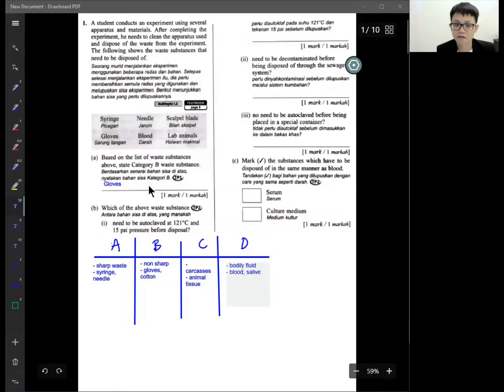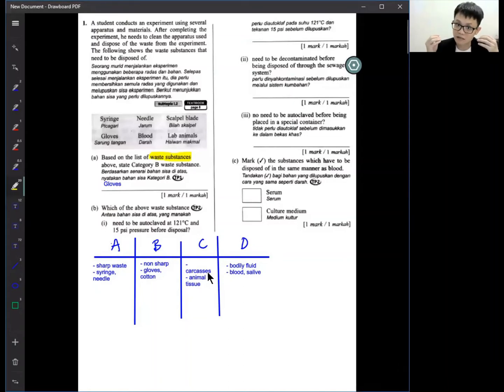The reason is: category A is for sharp waste like syringe and needle. Category B is non-sharp, it could be glove, cotton, towel, tissue and so on. C is for carcasses, the dead animal organisms like animal tissue or their meat or their organs. And category D is bodily fluid like blood and saliva.